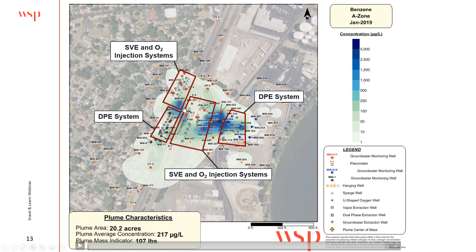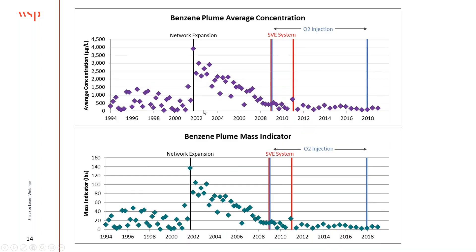Looking at the system on the northern part of the site, we highlight that particular system to see just how that one is behaving — and you can see different behavior in that part of the plume. Different parts of the plume can behave differently from each other.